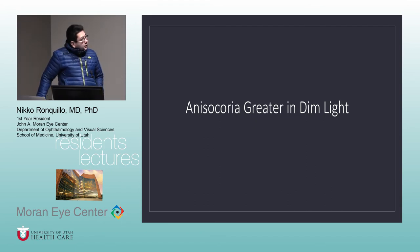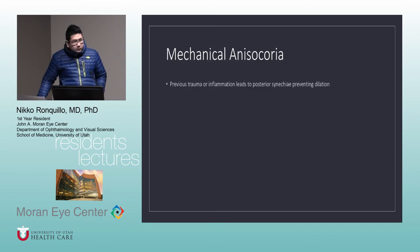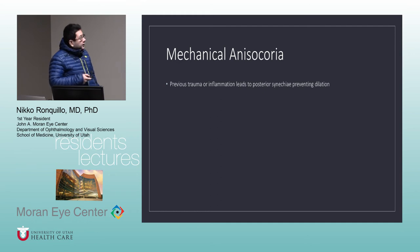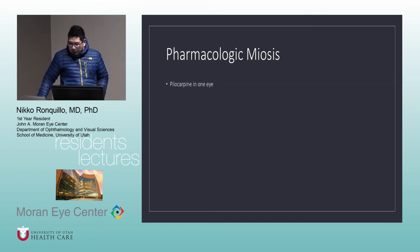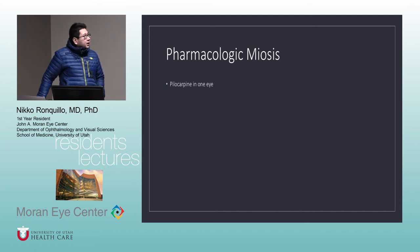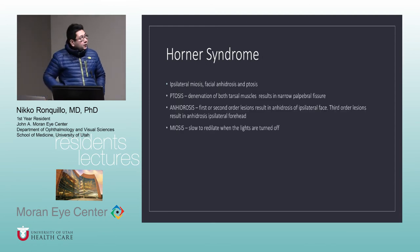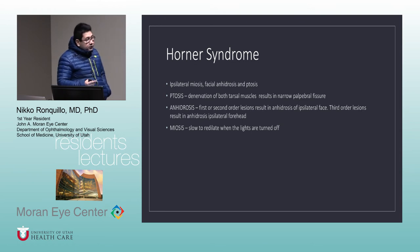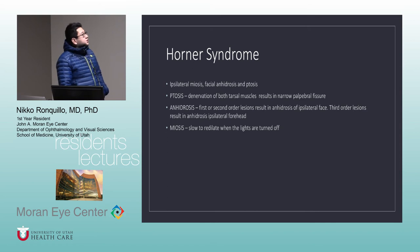For anisocoria greater in dim light: mechanical anisocoria can result from previous trauma or inflammation leading to a posterior synechiae preventing dilation. We can also have pharmacologic meiosis — one miotic agent is pilocarpine, so we always have to consider that. Next is Horner syndrome, whose symptoms include ipsilateral meiosis, facial anhydrosis, and ptosis.